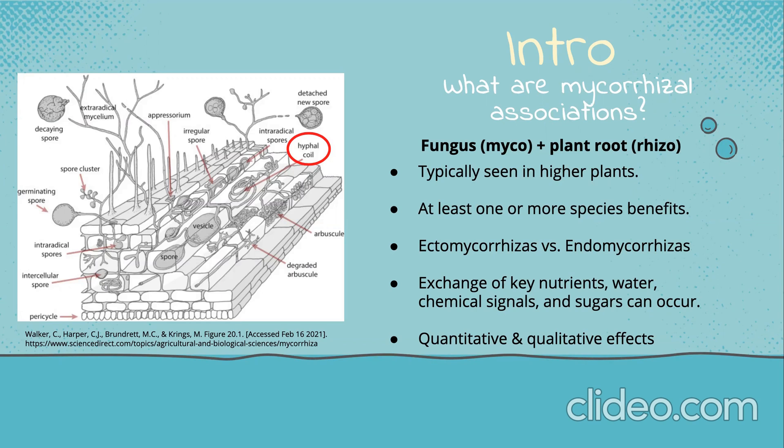These mycorrhizal fungi can have distinctive structures at which they can exchange key nutrients, water, chemical signals, and sugars. We'll be focusing on ericoid mycorrhizals, which are known to produce a hyphal coil structure inside the plant cell.